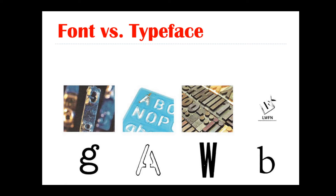In the days of photo type, which preceded digital technology, a font referred to the film onto which the typeface was imprinted. In the days of metal type, fonts were made of metal. Since there was one font for each point size, a font referred to a complete character set of a single size of a particular typeface, so that each point level — for example, 8 point, 10 point, or 12 point — was considered a different font.